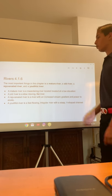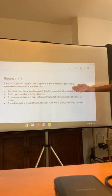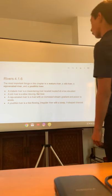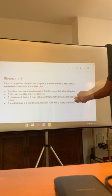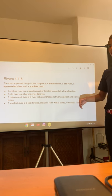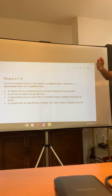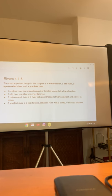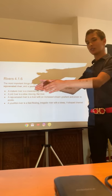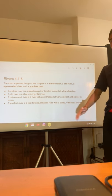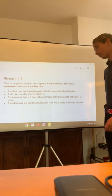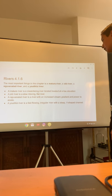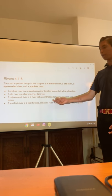This next slide is going to be about rivers, 4.1.6. The most important things in this chapter are a mature river, an old river, a rejuvenated river, and a youthful river. A mature river is a meandering river located at a low elevation — not up in the mountains, but located on the lower section. An old river is a slow-moving, flat river — like an aqueduct shape but moving super slow. A rejuvenated river is a river with increased stream gradient and power to erode, so it has a ton of power and is kind of fast.